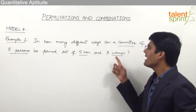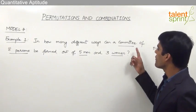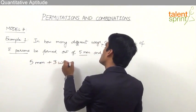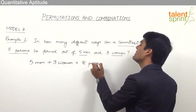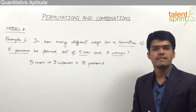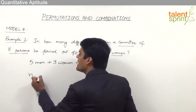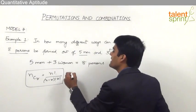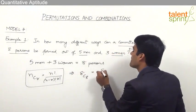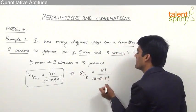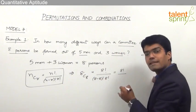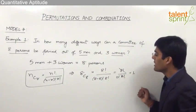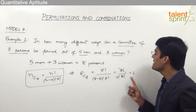There are five men and three women, so total there are eight persons, and we need to form a committee of eight persons. Five men plus three women equals eight persons, and we need to form a committee of all eight. So the answer here is 8C8, which is equal to 8 factorial by (8 minus 8) factorial into 8 factorial. This gives 8 factorial by 0 factorial multiplied with 8 factorial. The 8 factorials cancel, and since 0 factorial equals 1, we get 8C8 = 1.